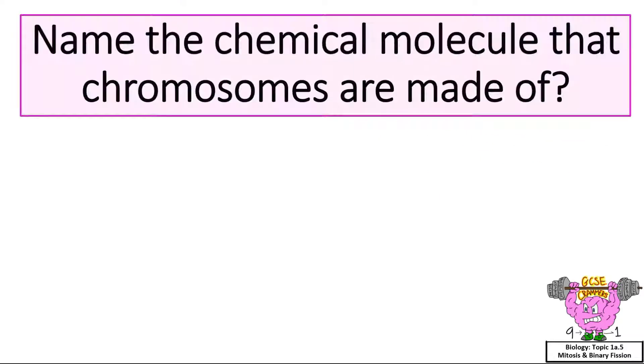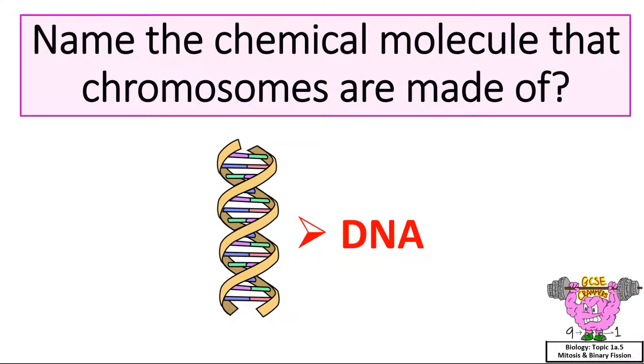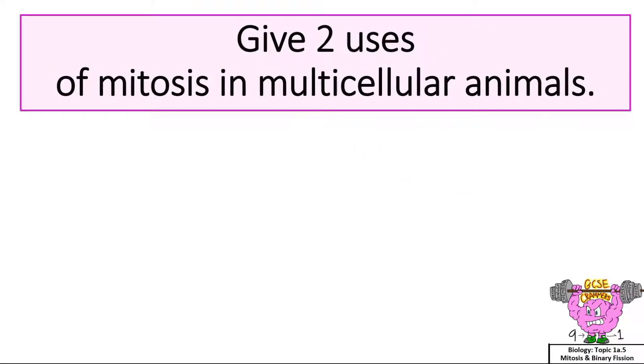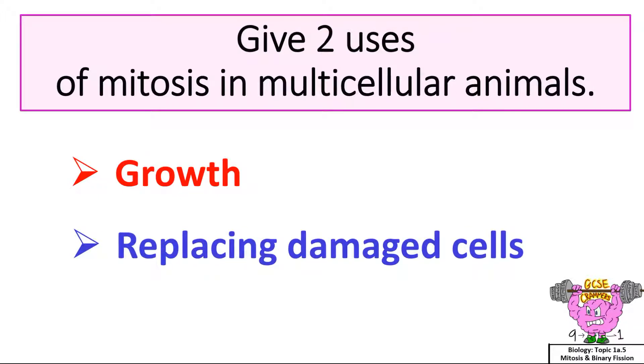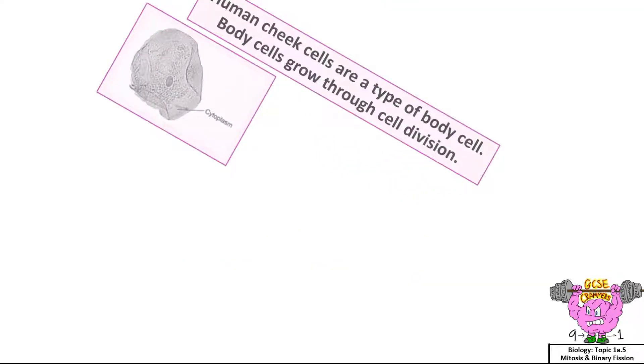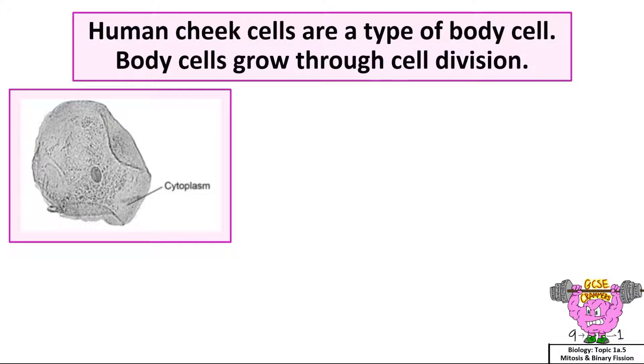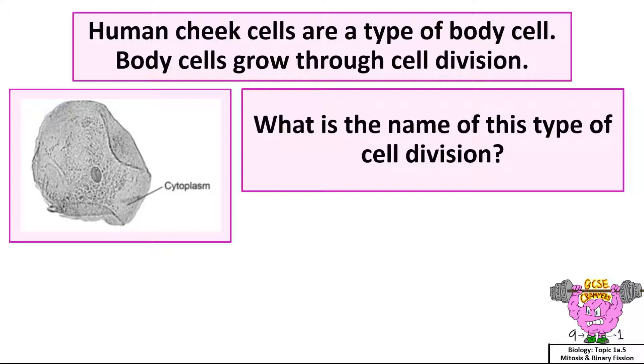Name the chemical molecule that chromosomes are made of. DNA. Give two uses of mitosis in multicellular animals: growth and replacing damaged cells. Human cheek cells are a type of body cell. Body cells grow through cell division. What is the name of this type of cell division? Mitosis.